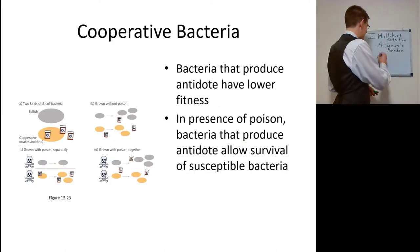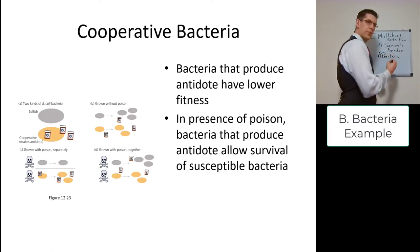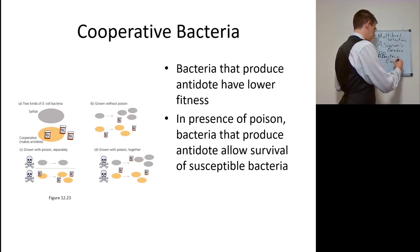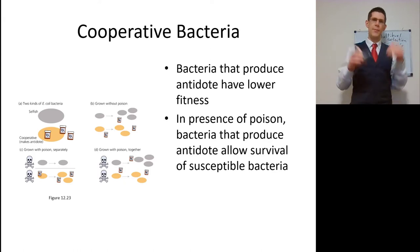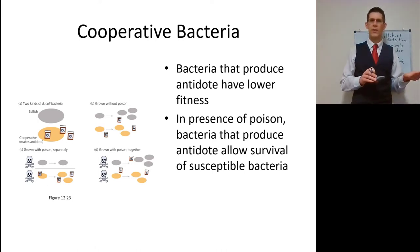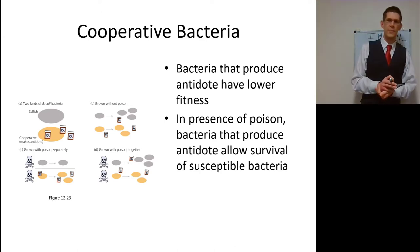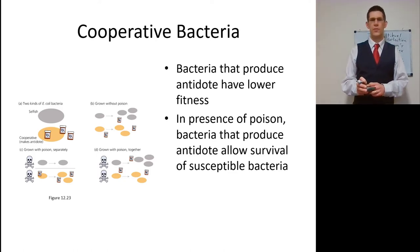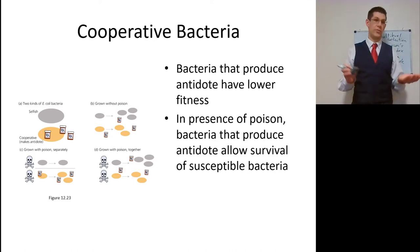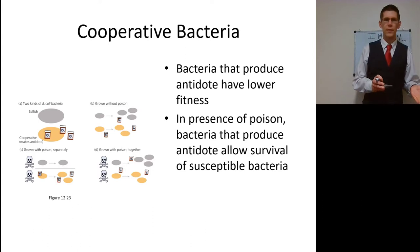We see this in a bacteria example where individuals can make an antitoxin, which implies a cost — they'll have lower fitness if they make an antidote. Grown together without poison, the ones making the antidote have lower fitness than the selfish ones, who do better because they're getting the antidote from their neighbors. If grown separately, the selfish ones don't grow but the ones with the antidote do. If grown with poison together, the cooperative ones again don't do as well within the group, but the selfish ones do only a little bit better.